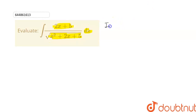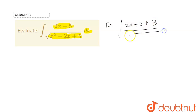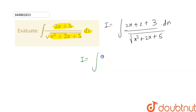Here, our integral I is given as the integration of (2x + 5) divided by the square root of x² + 2x + 5 dx. Now, 5 can be written as 2 + 3, so the numerator becomes (2x + 2) + 3. Let's separate the terms: (2x + 2) divided by the square root of x² + 2x + 5.